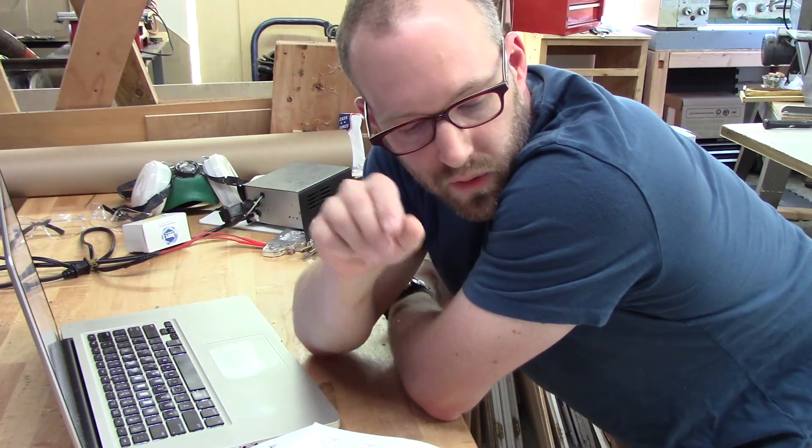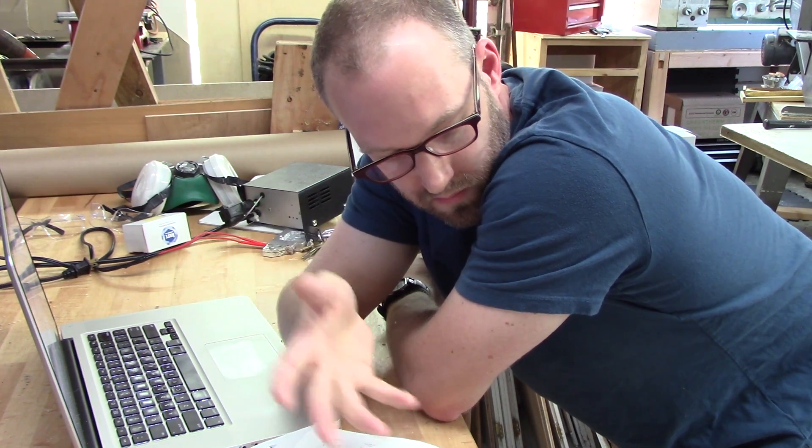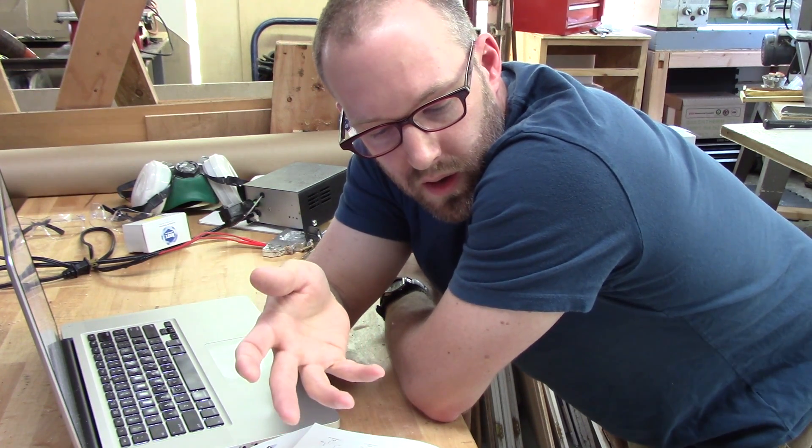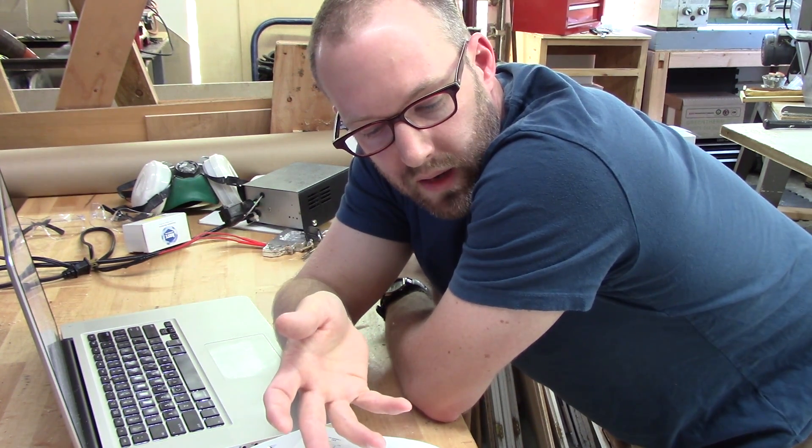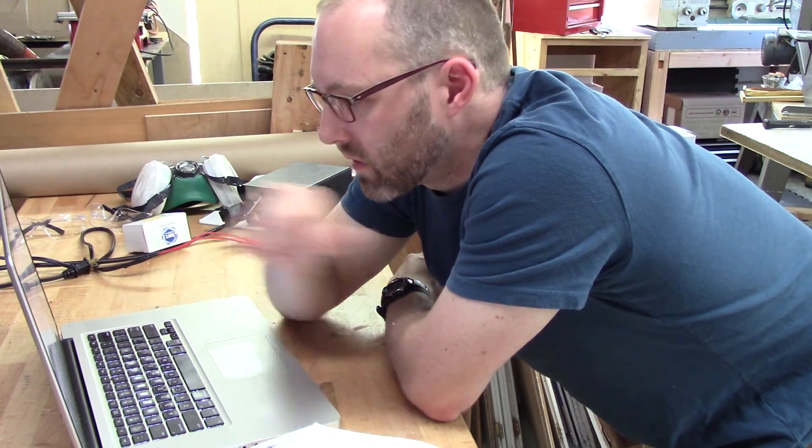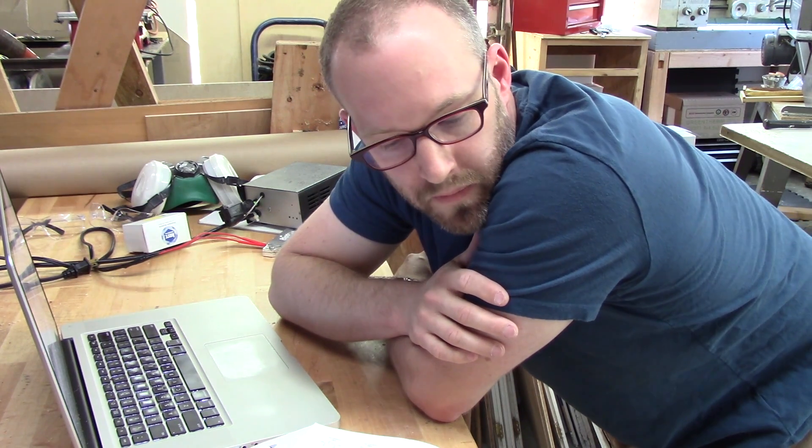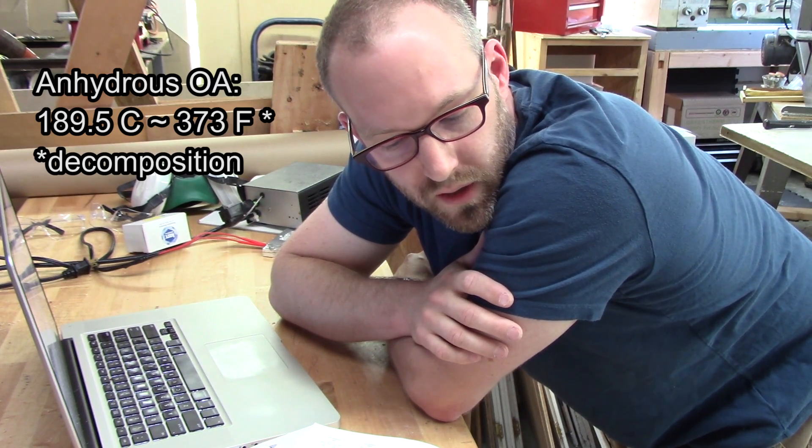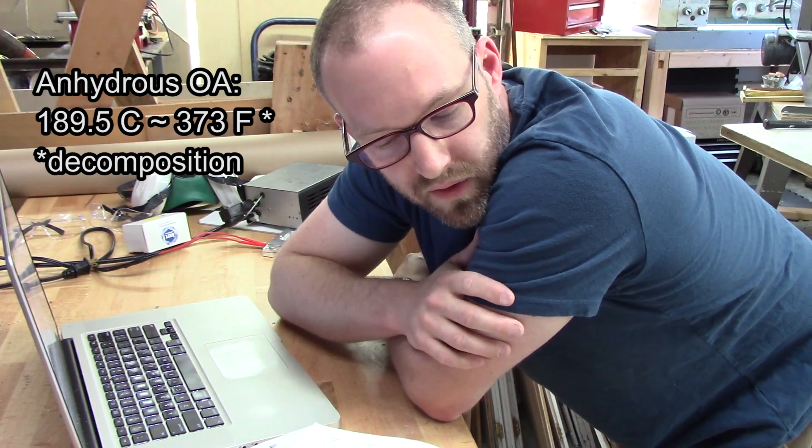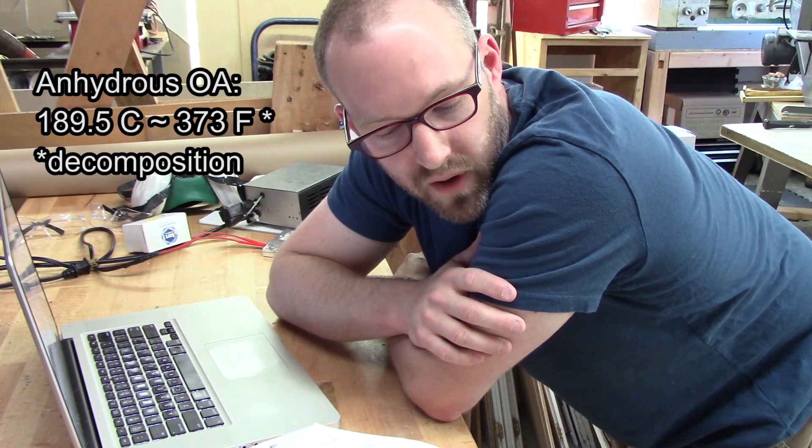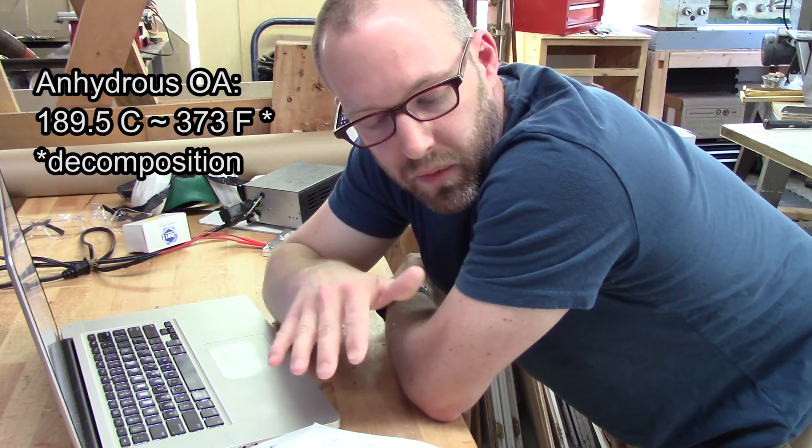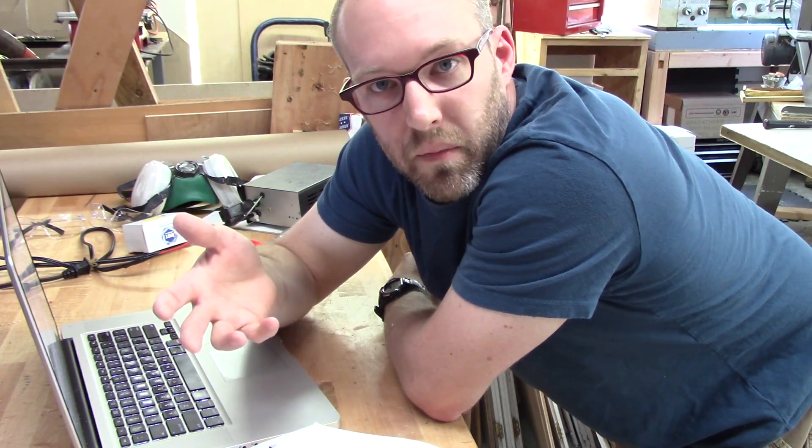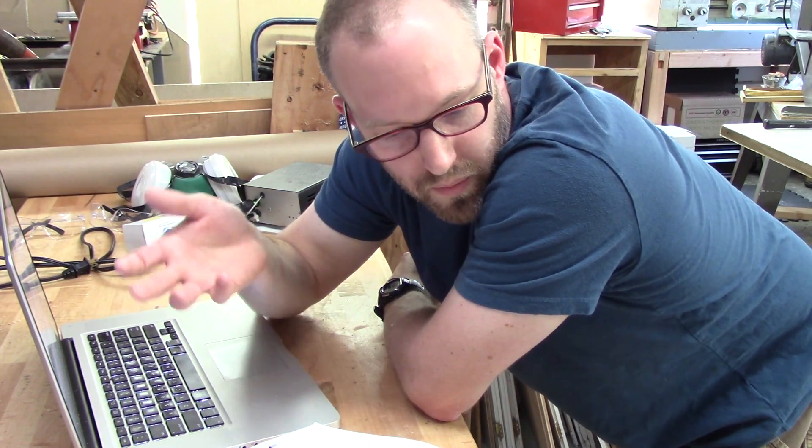And then if we look at the oxalic acid proper, the anhydrous form, we see the melting point is 189.5 Celsius and that's 373 Fahrenheit. Well there's a note next to that that says decomposition. So this 189.5 Celsius is the decomposition temperature of oxalic acid. That's the temperature at which, if you heat it up to that temperature, it's no longer oxalic acid. It becomes something else. It deteriorates into other byproducts.